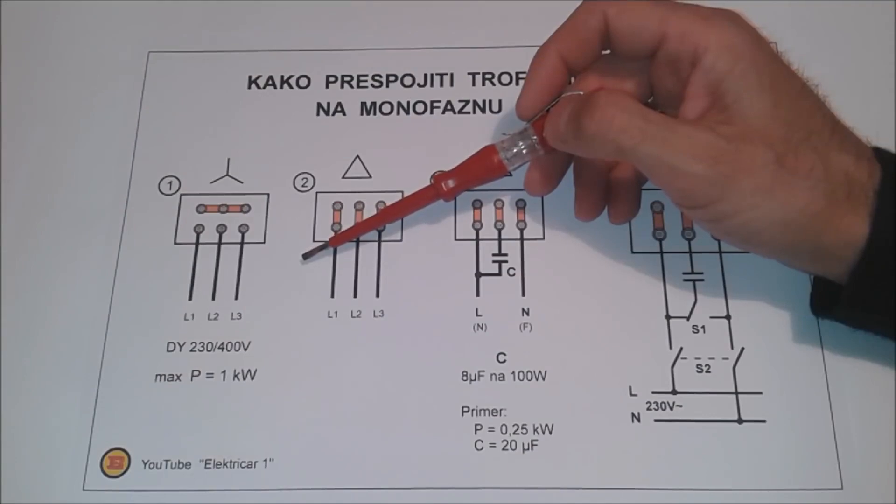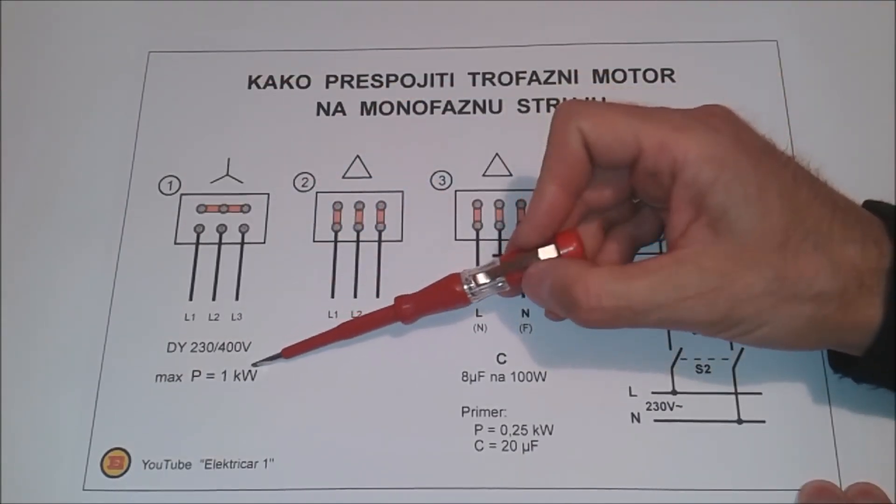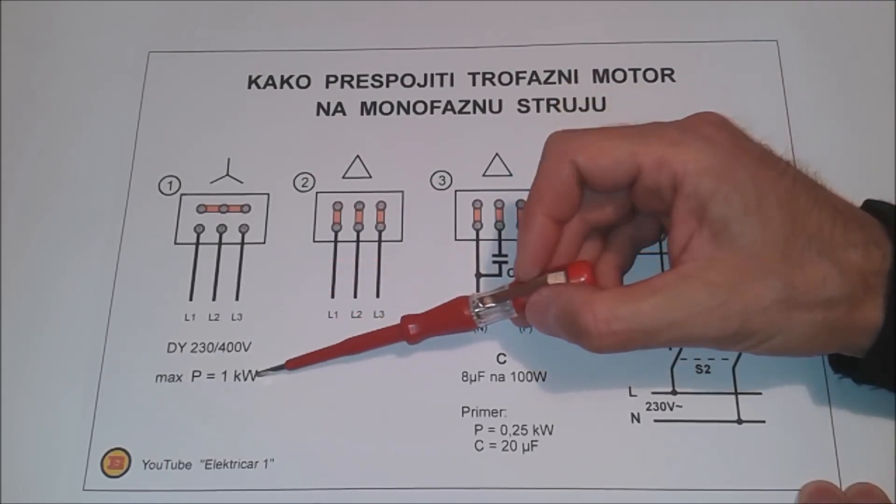First, let's see it theoretically. The maximum power of a three-phase electric motor that we can transfer to work on a single-phase power supply is 1kW.